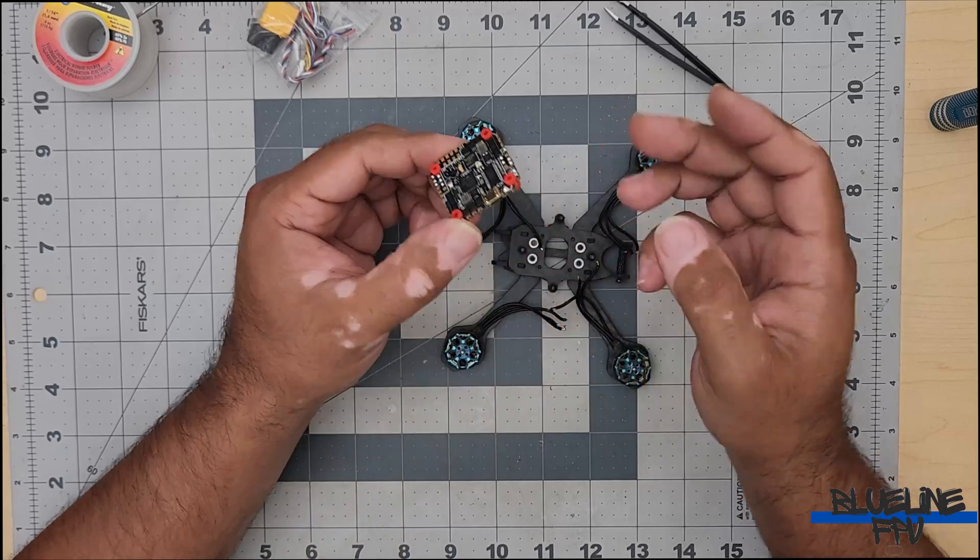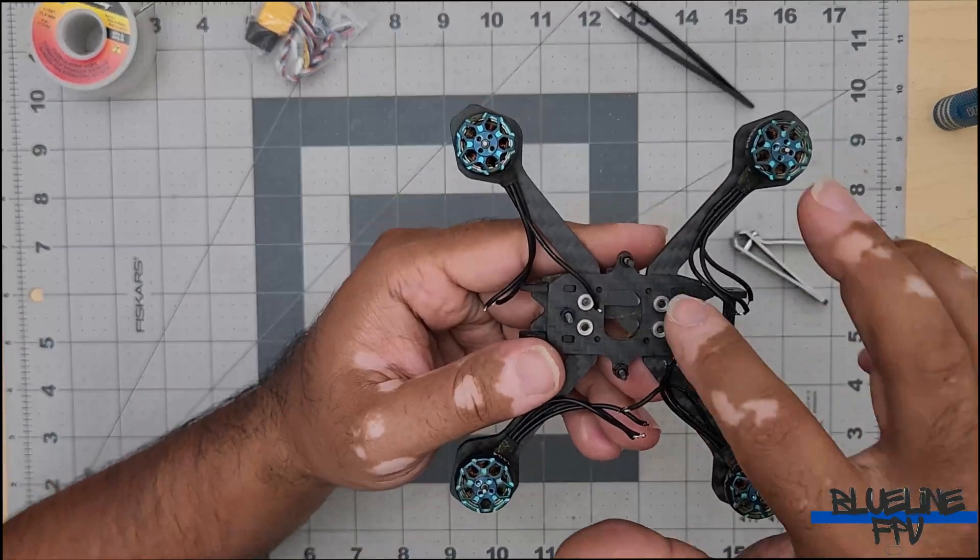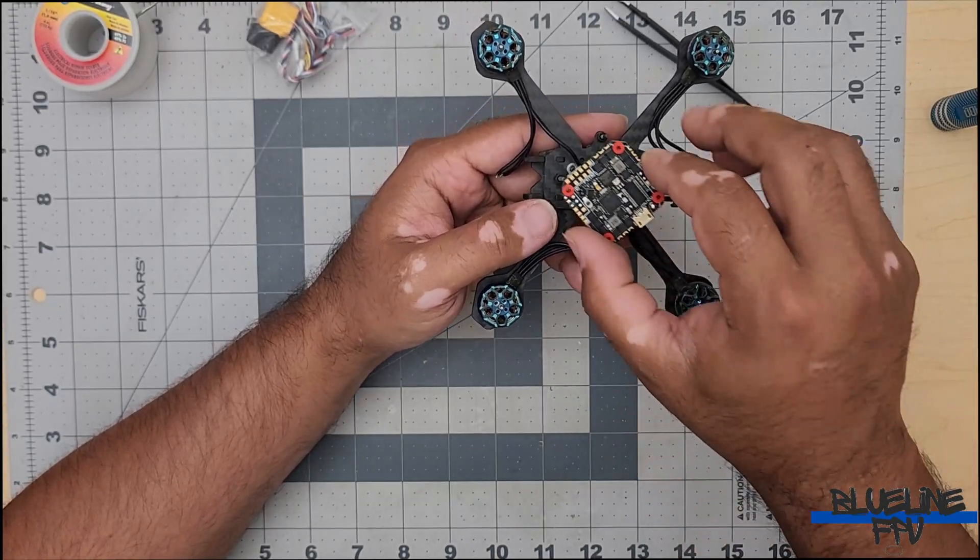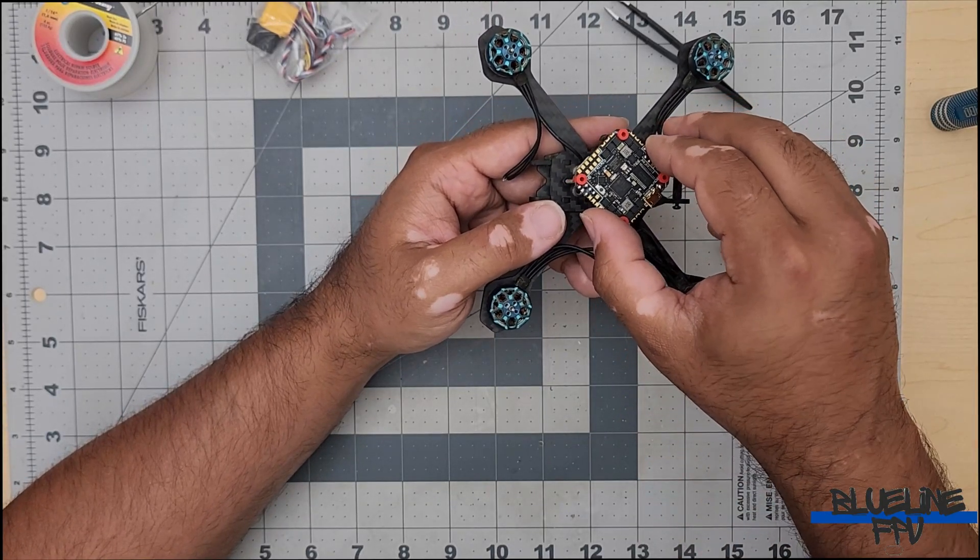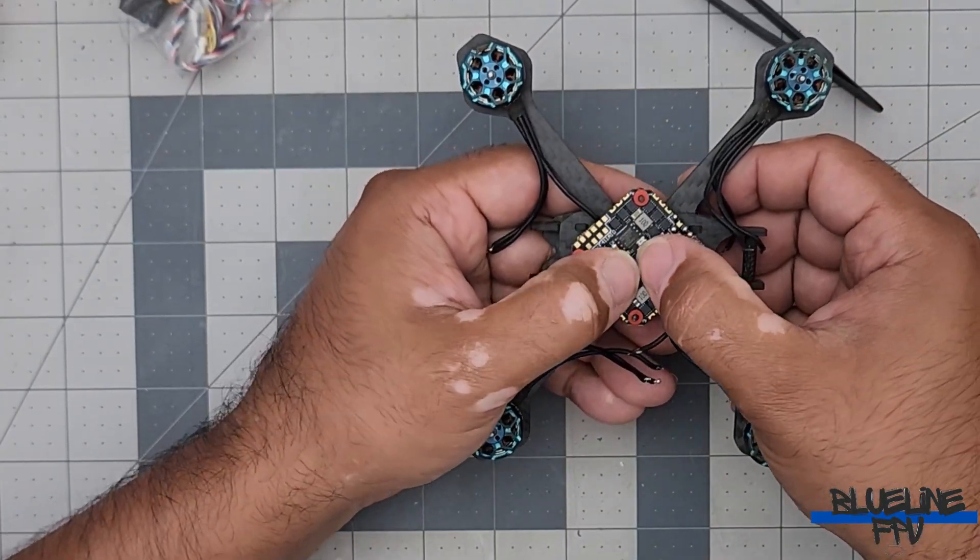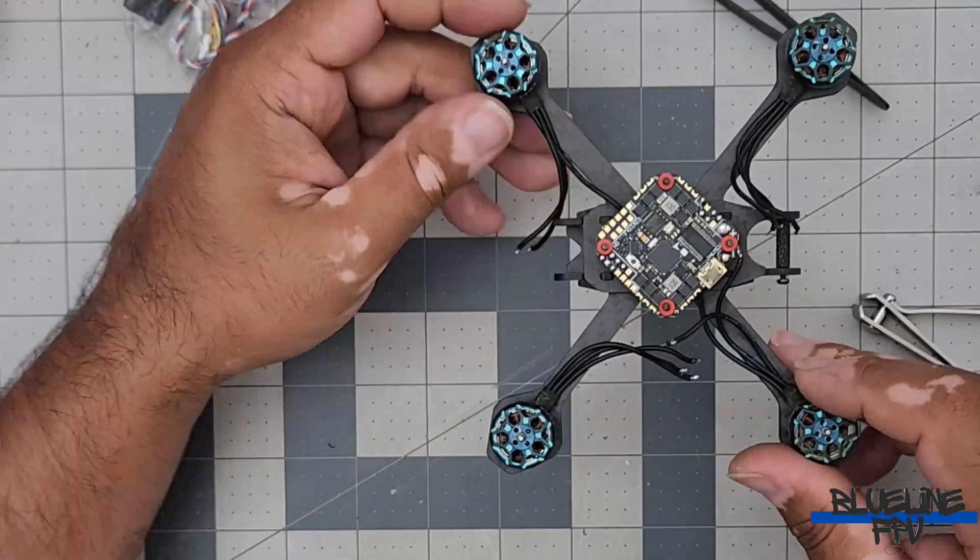Now let's mount our flight controller on the drone. And as you can see, we've got these little standoffs right here. And the flight controller will sit directly on those standoffs. Bada bing bada boom, just like that. That gives us a better base to work with once we start soldering our motor pads.